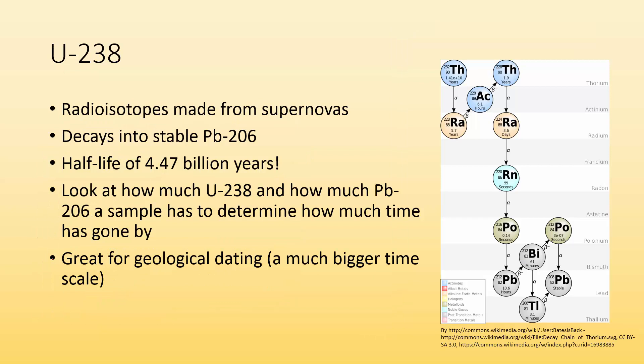We got uranium-238, which is a radioisotope that's made when stars explode in supernovas. It decays to become stable lead-206, and the half-life is about 4.47 billion years, so it's a really long half-life. The reason that becomes useful is because we can use uranium-238 and look at how much lead-206 it decayed into to determine how much time has gone by. You can use that to date and figure out how old some geological samples are. This is really helpful in rocks and stuff that are going to be really old.